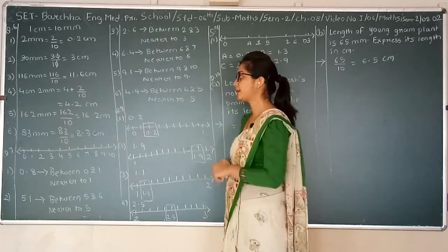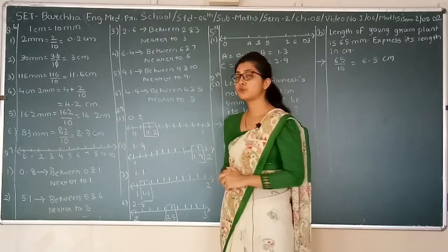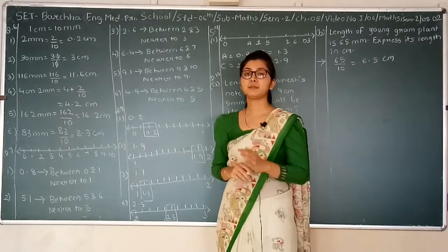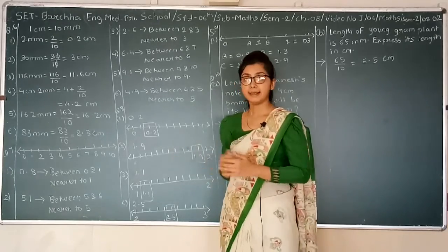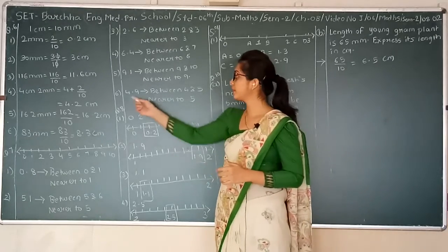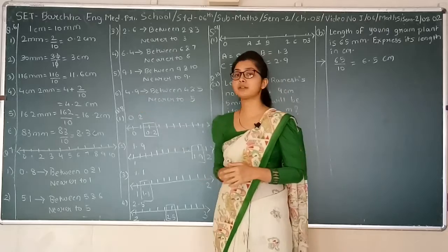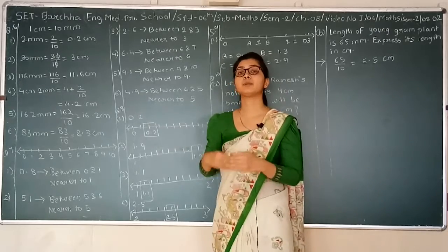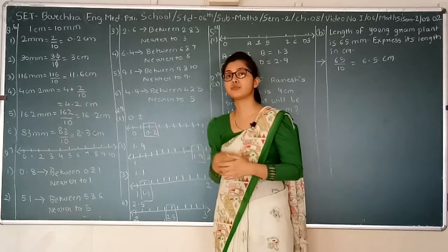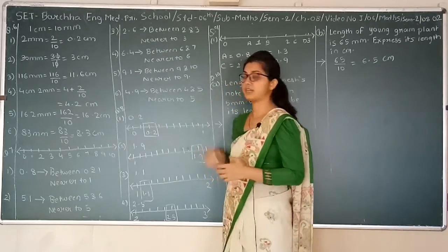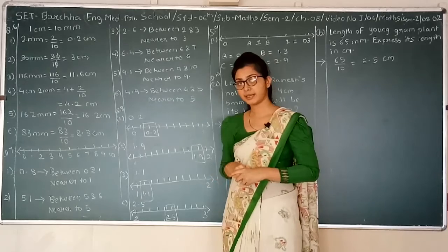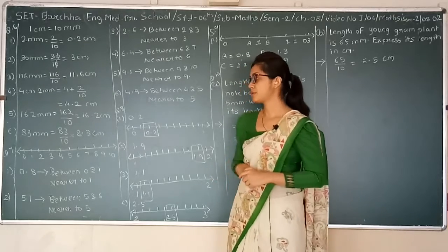Next one: 4.9. 4.9 will be in between 4 and 5. Since the decimal part 0.9 is greater than 0.5, it will be closer to 5, which is the bigger number in our case.